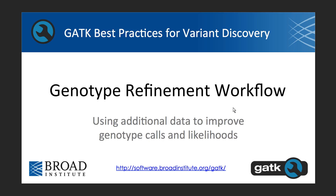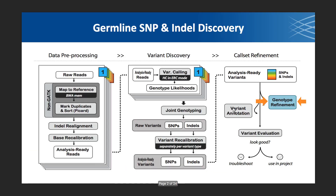Yossi covered variant filtration, which happens at the variant level or at the site level. This next step in our workflow improves the sample-level data by recalibrating the genotype likelihoods and potentially improving some of the genotype calls. This is in the later end of our pipeline — after we have our analysis-ready variants, genotype refinement is one option for further post-processing.